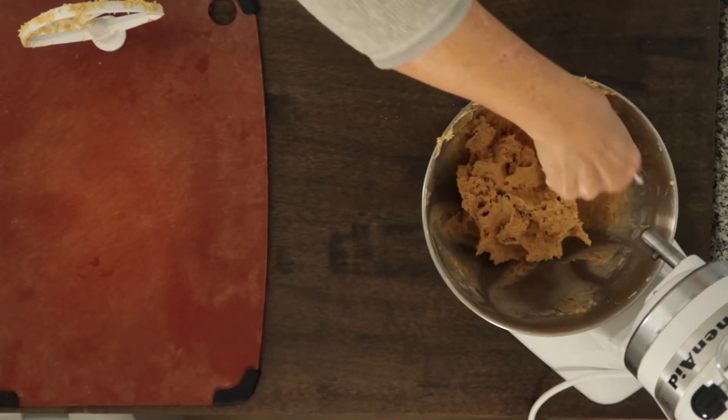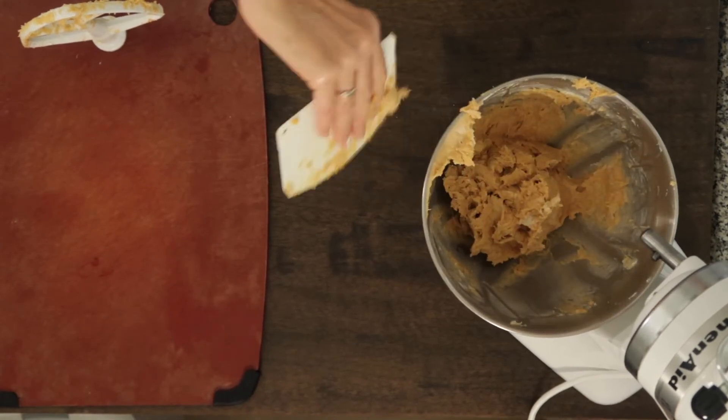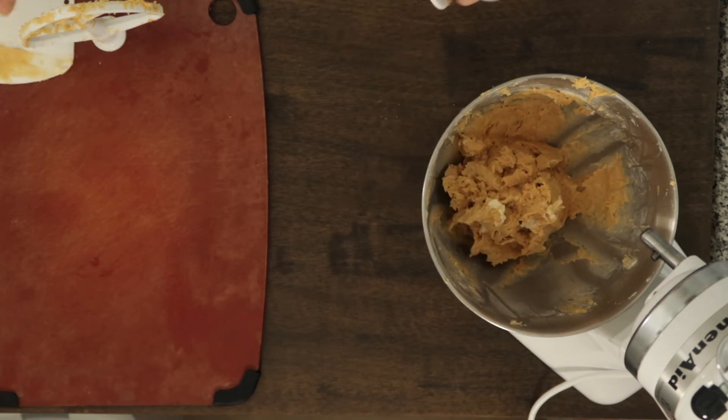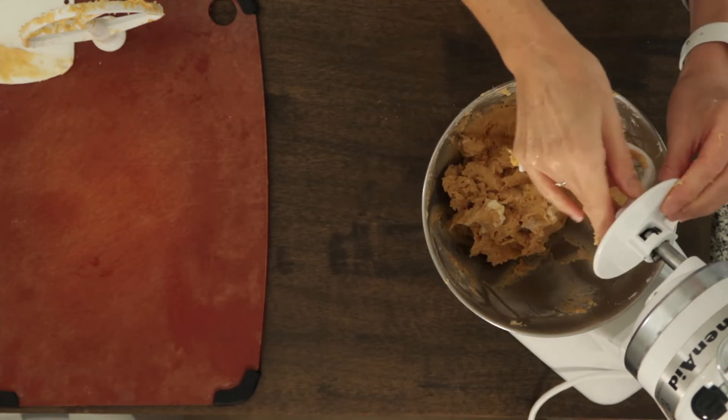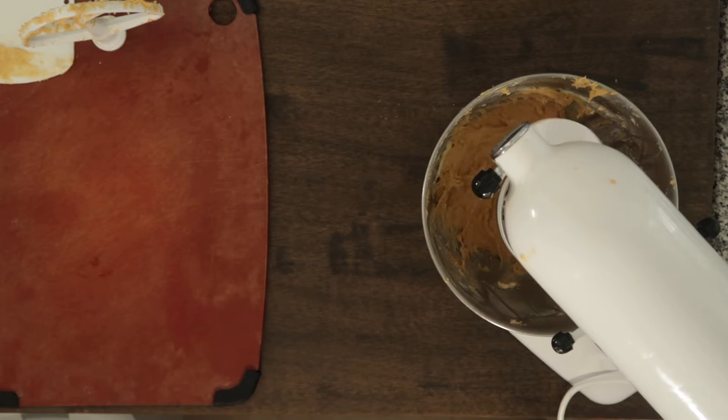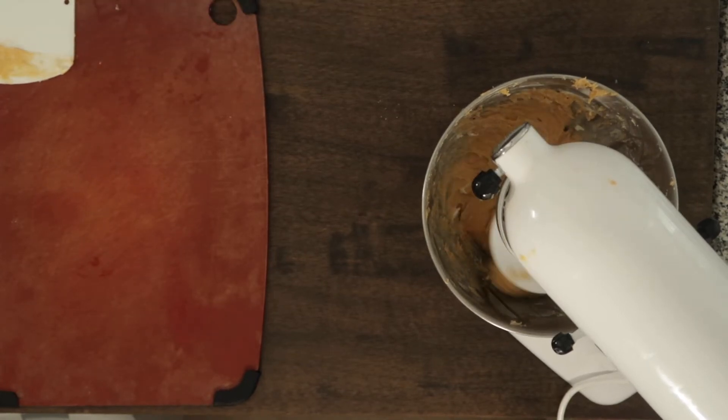Always always scraping down. Get yourself two of these bowl scrapers so you have one clean, one dirty, and you're always good to go. Now we're going to mix for five minutes. The video is speeded up so that it doesn't take forever.